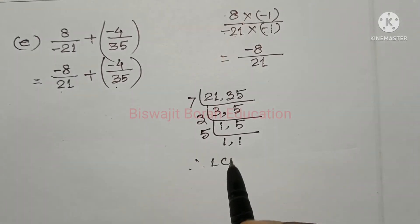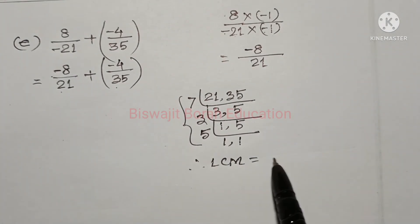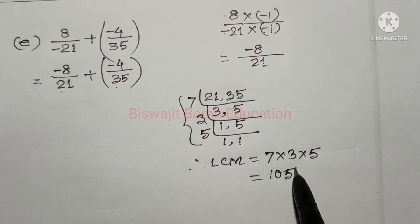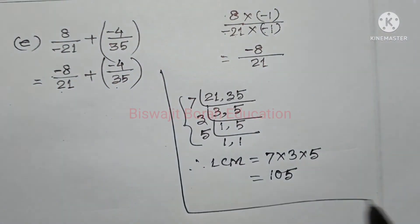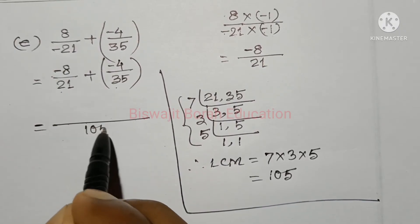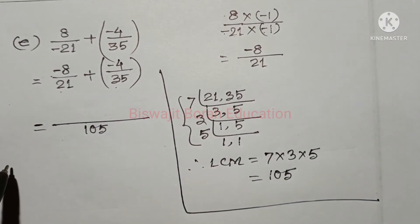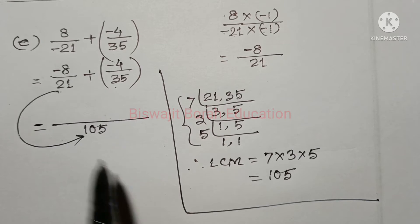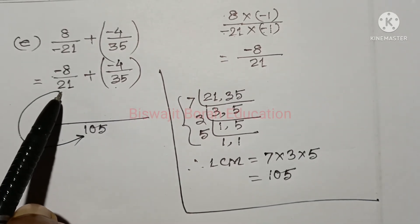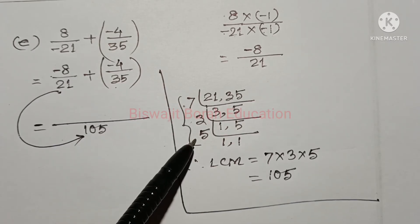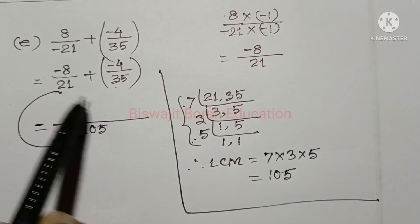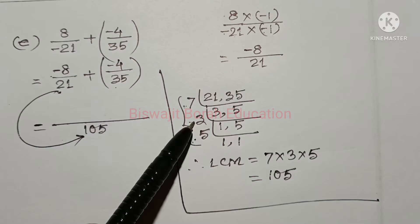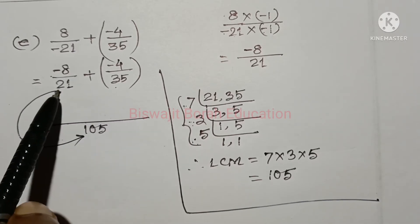Seven into three into five. One zero five. So the LCM result comes out. This equation of 5, the number equals 21.